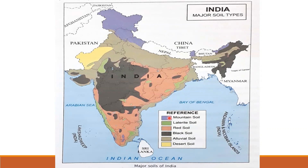Mountain soil is shown using purple color. Mountain soil is found in the Himalayan region of Jammu and Kashmir and in the hilly areas of Himachal Pradesh, Uttarakhand, Sikkim, and some parts of Arunachal Pradesh.